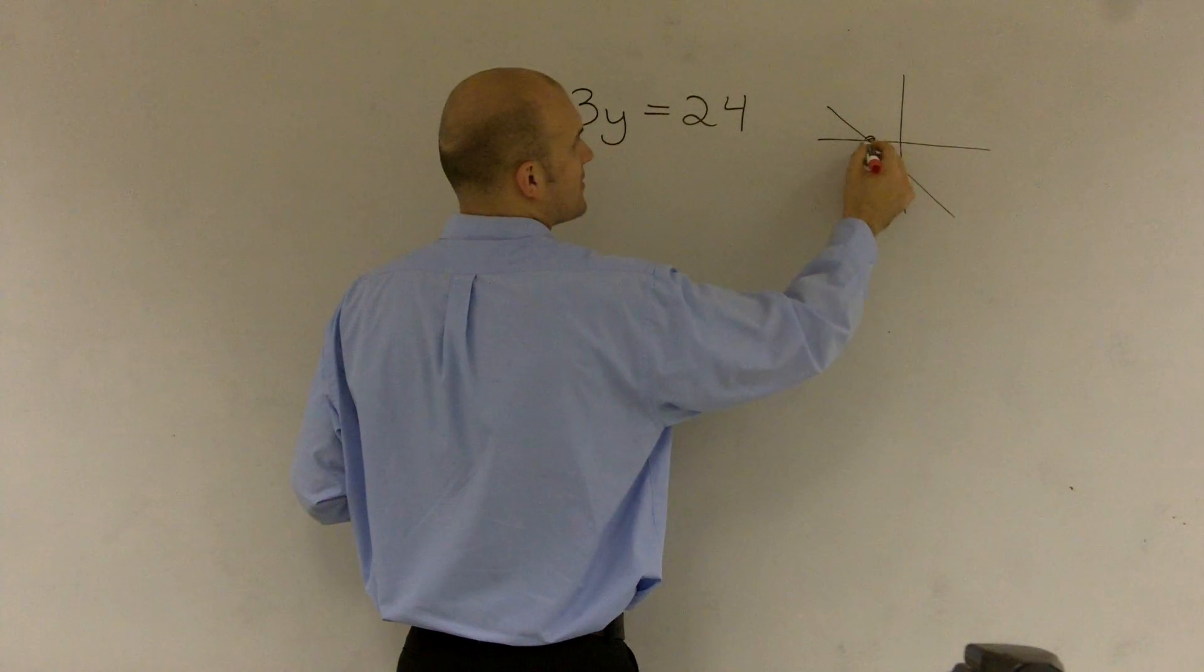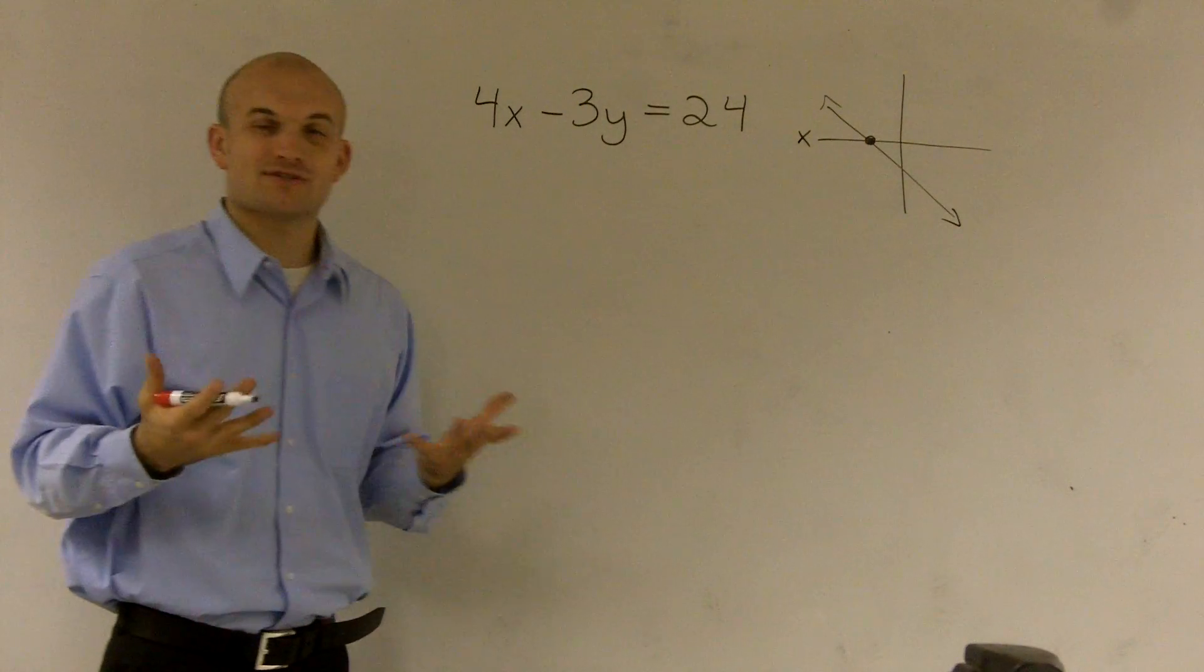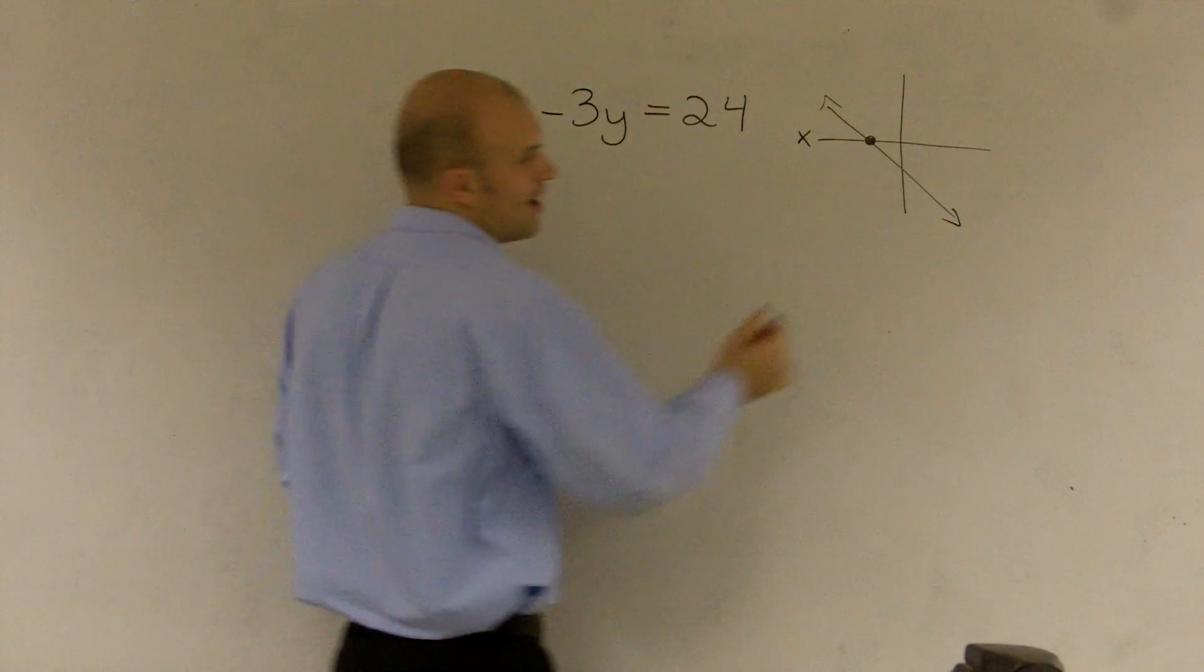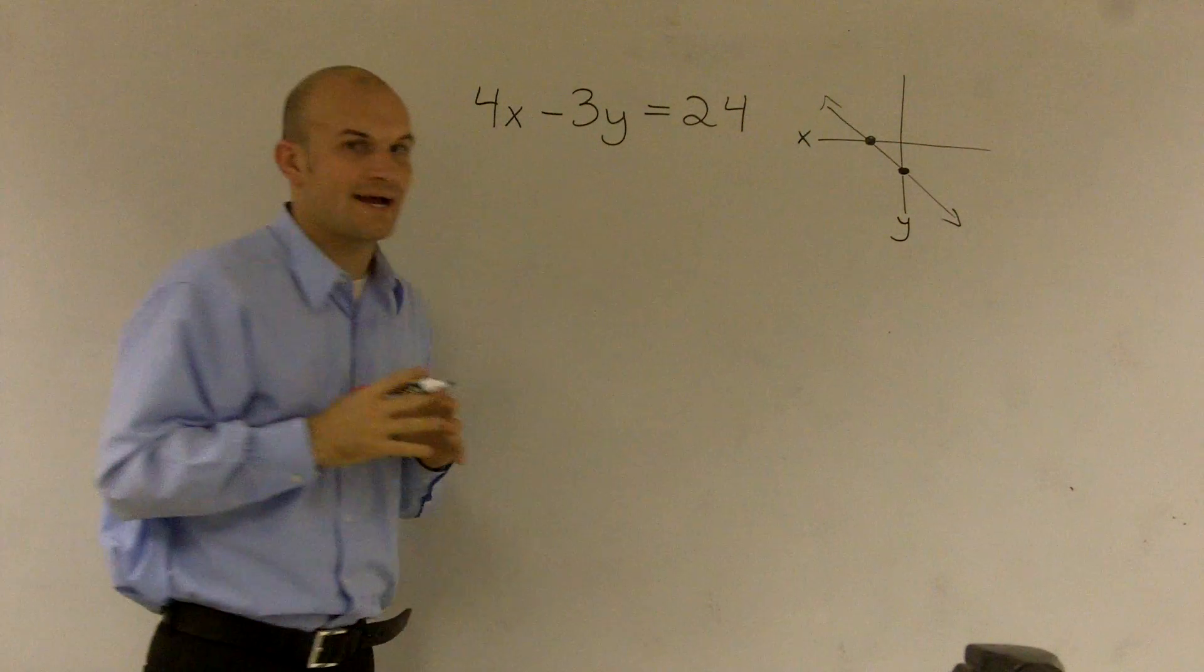Well, remember, the x-intercept is where a graph crosses the x-axis, where it intercepts that x-axis. And the y-intercept is where a graph crosses or intercepts the y-axis.